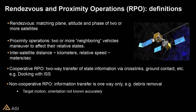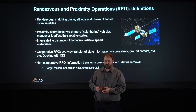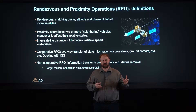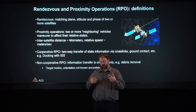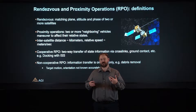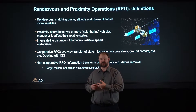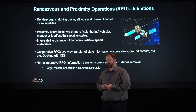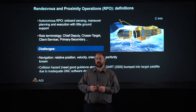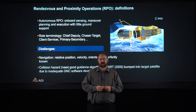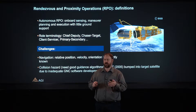We can do all of this in two different ways: cooperative rendezvous and prox ops, or non-cooperative rendezvous and prox ops. Cooperative means we have more perfect information about how we're moving, where we're at, and how the other satellite is moving and where it's at. In non-cooperative scenarios, we may not know where our target vehicle is, but we typically know where we're at to some degree of certainty. We can also do this autonomously, using onboard software to help us do the operations we need.